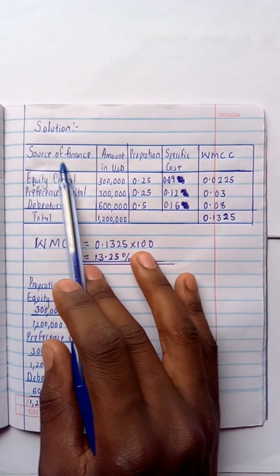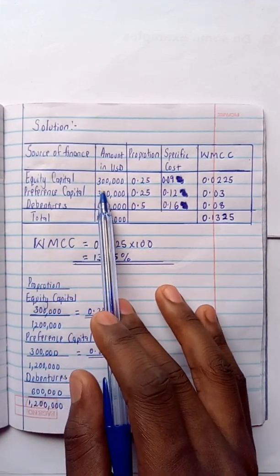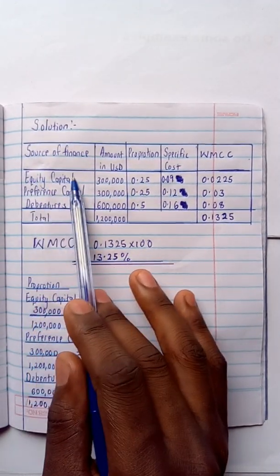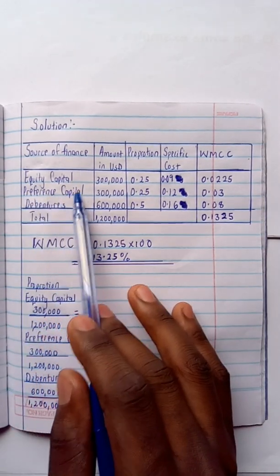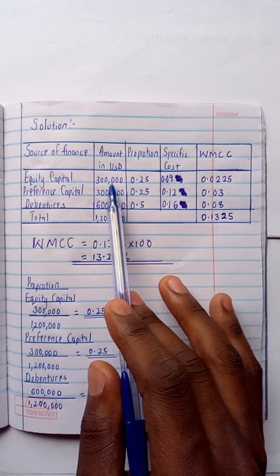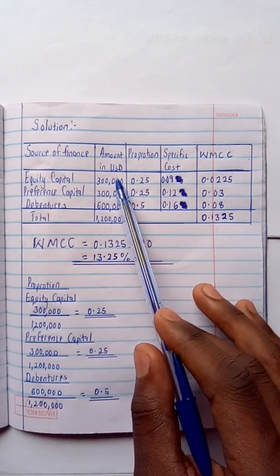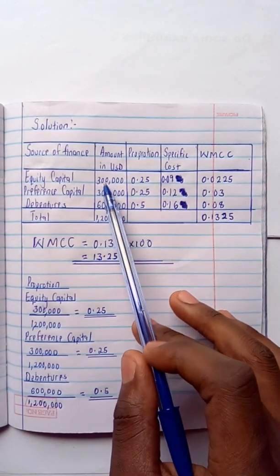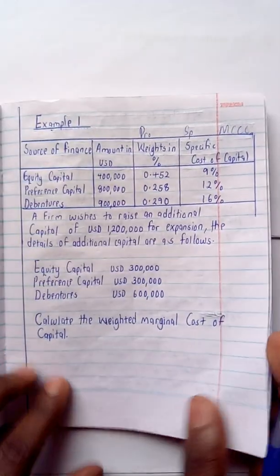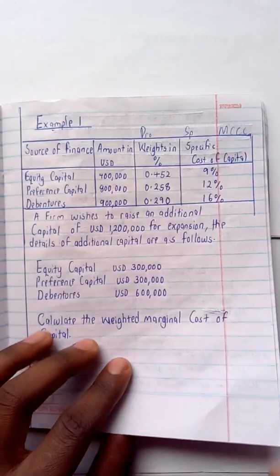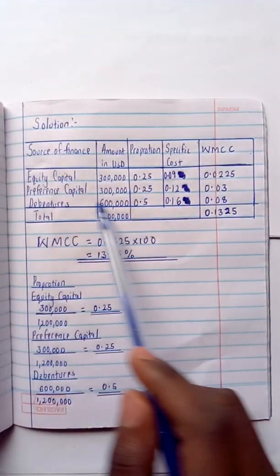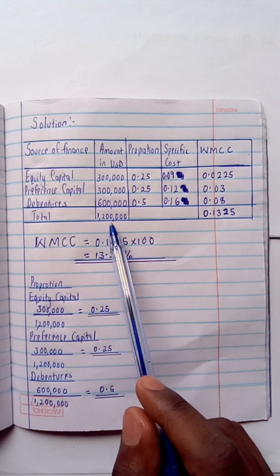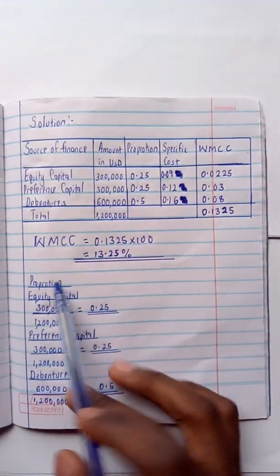For the solution, just like our previous examples on finding the Weighted Average Cost of Capital, we are going to have the source of finance as equity capital, preference capital, and debentures. The amounts in US dollars are taken from the additional information: equity capital 300,000, preference capital 300,000, and debentures 600,000, giving a total of 1.2 million.